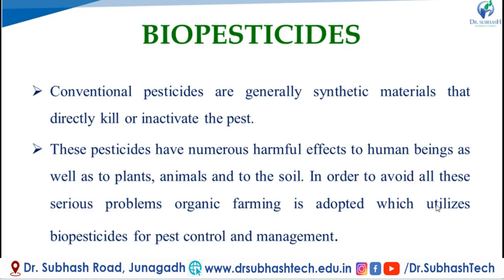Introduction. Conventional pesticides are generally synthetic materials that directly kill or inactivate the pest. These pesticides have numerous harmful effects to human beings as well as to plants, animals and to the soil. In order to avoid all these serious problems, organic farming is adopted which utilizes biopesticides for pest control and management.